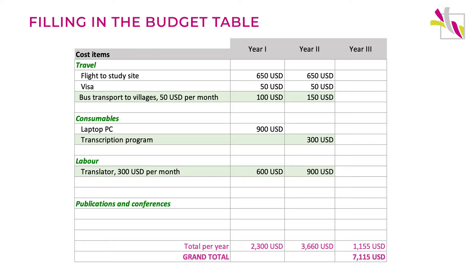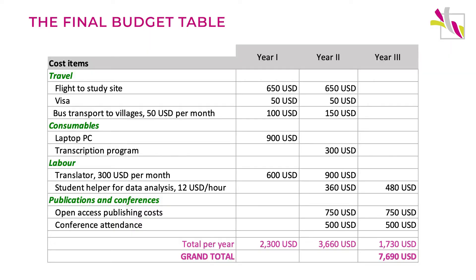Translation, because of course many researchers go to countries where they don't speak the native language, so they also have to engage someone to translate the interview results. And while you are putting together the costs, you could also try to sort them according to categories — for example, equipment like a laptop or thermal camera, consumables like lab chemicals or printer ink, labor costs like a translator or student assistant, travel costs, visa costs, and costs for publishing your papers. All of this listed and sorted makes the budget really easy to view for reviewers.